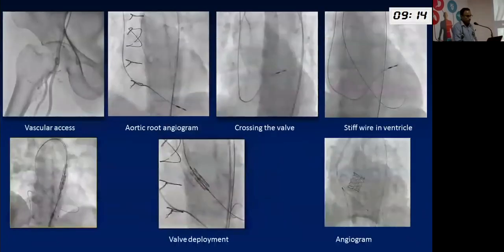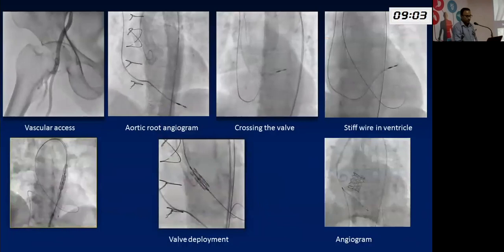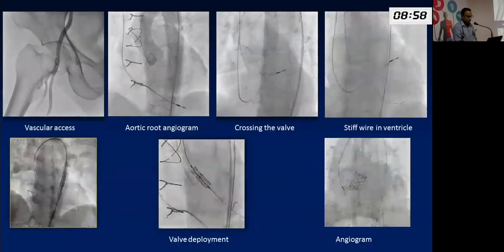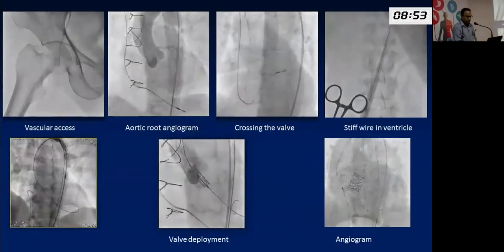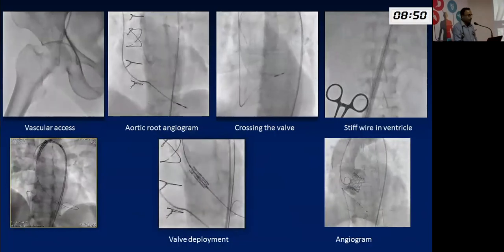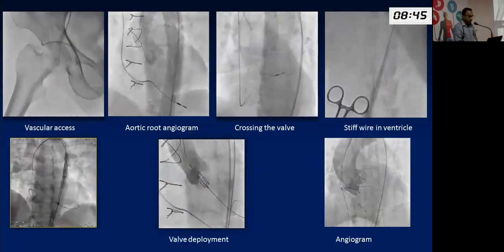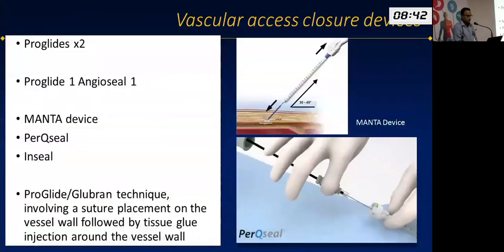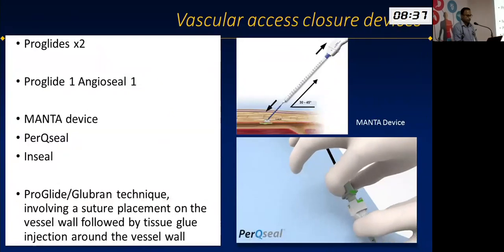Fluoroscopically, the procedure looks like this: first you obtain vascular access, perform an aortic root angiogram to visualize the anatomy and define the level of valve deployment, cross the valve with a smaller wire, place a stiff wire in the ventricle, take the valve across the aortic arch, and place it in the correct position. After deployment, the final angiogram shows dye only in the aorta with no back-leakage into the ventricle, confirming the valve is functioning well.